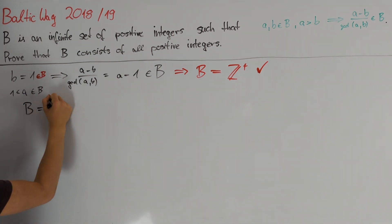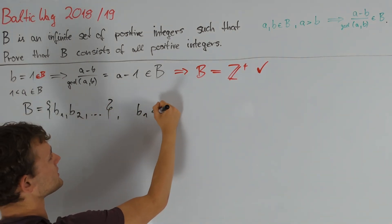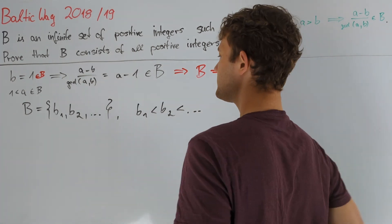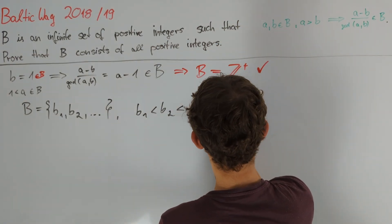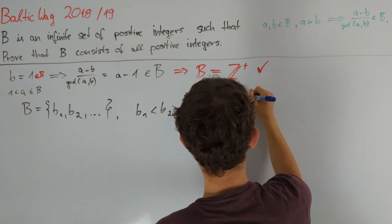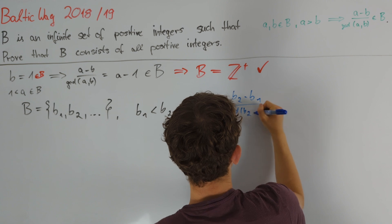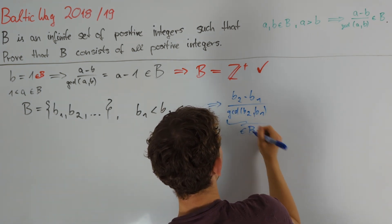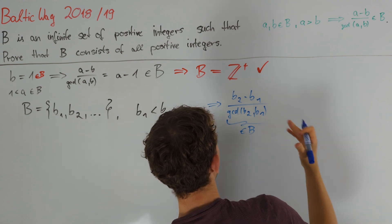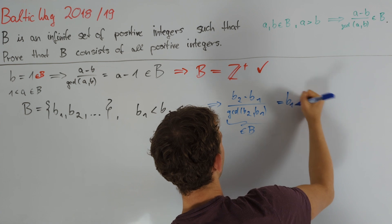So, to start, let us call the elements of B, b1, b2 and so on, in such a way that b1 is less than b2 and so on. We can use this notation to get some concrete results out of this. Namely, we know that b2 minus b1 divided by the GCD of b2 and b1 is less than b2, but it is also contained in B, and since b2 is the second smallest element of B, we can conclude that this must be equal to b1.